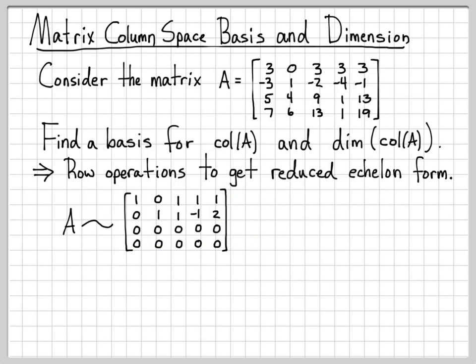And then identifying how many columns are linearly independent is pretty easy. You just need to examine the pivot points. And here we see that there are two pivots. There's a pivot in column one, and there is a pivot in column two.